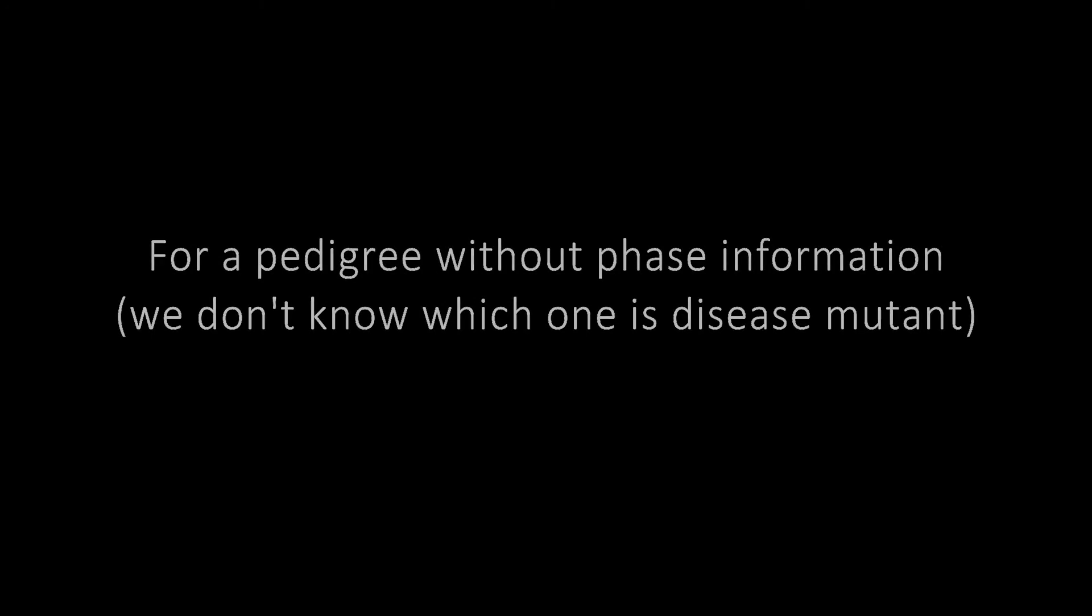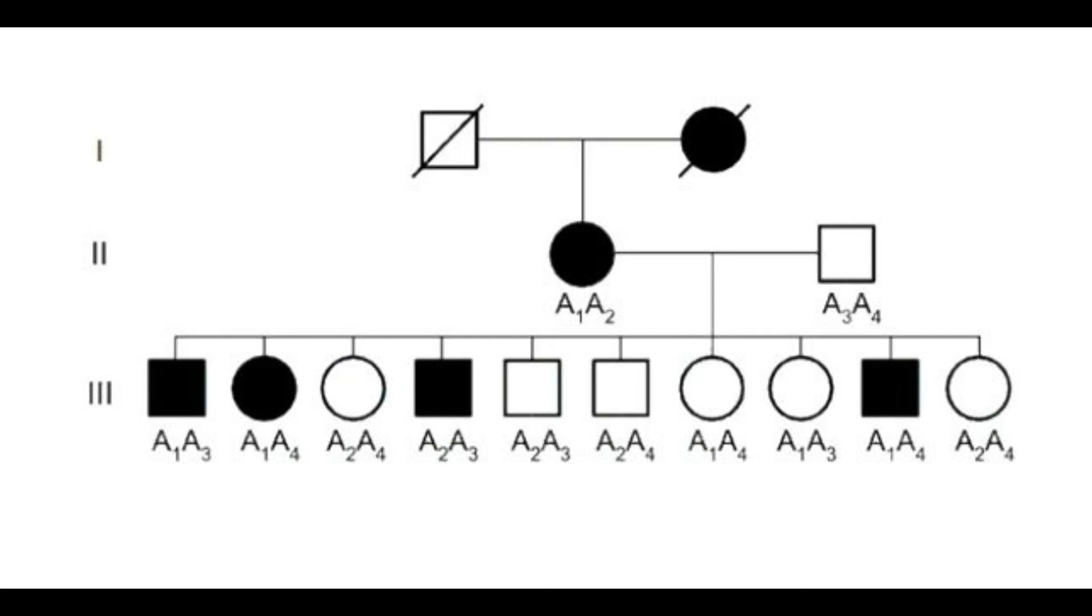For the second pedigree, we do not have the phase information about which one is the normal and which one is the mutant allele. As you can see, the first generation has these slashes on the images, which shows that we do not have the genotype information for it, so we lack the phase. In the second generation, we can see that a1a2 is the one that is colored black. We have to create two scenarios where either a1 or a2 is imparting the disease allele to future generations.